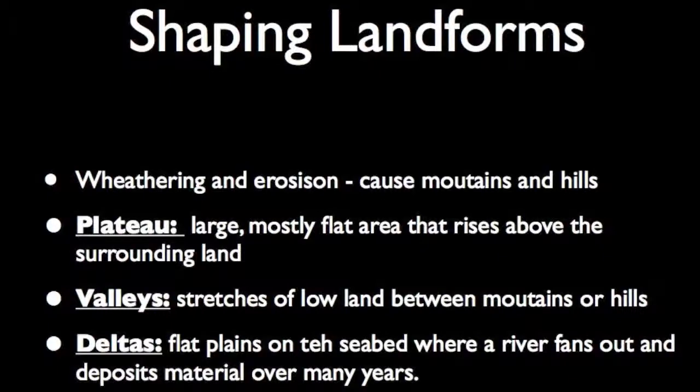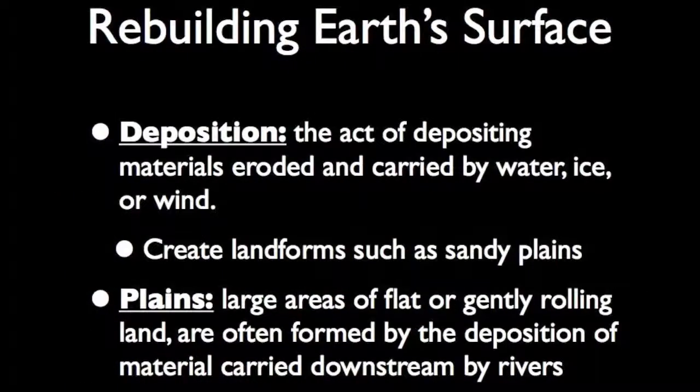Weathering and erosion have shaped many of Earth's landforms, including mountains and hills. Mountains are wide at the bottom and rise steeply to a narrow peak or ridge. Hills are lower than mountains and often have rounded tops. While forces within Earth create mountains, forces on Earth's surface wear them down. Millions of years ago, the Appalachian Mountains in the eastern United States were as high as the Rocky Mountains. Rain, snow, and wind wore the Appalachians down into much lower peaks.